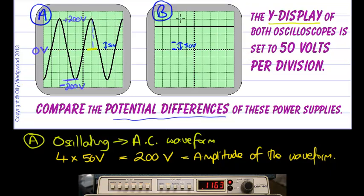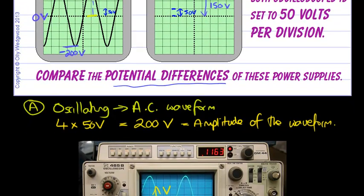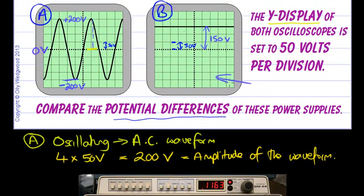What about part B? Well, B is not oscillating, it's just remaining constant. How many divisions? We've got 1, 2, 3. So that distance represents 150 volts. B is a DC supply delivering 150 volts of continuous non-varying voltage.